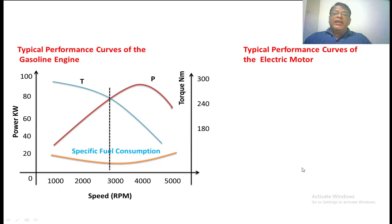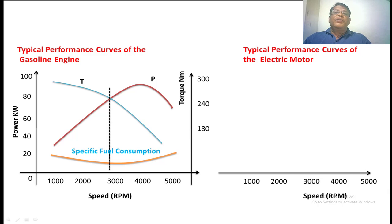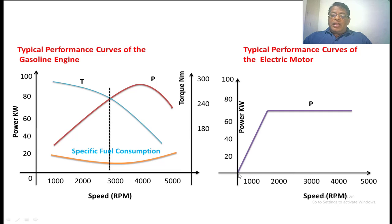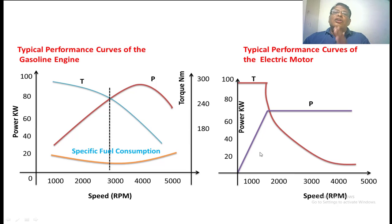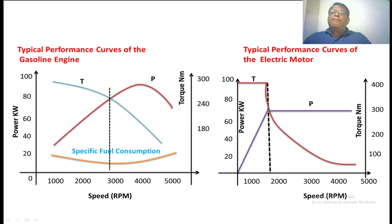Now, if we look at the performance curves of an electric motor: speed on the x-axis, power on the y-axis. As speed increases, the power developed in the motor also increases. After a particular value, power is constant. Up to that speed value, torque is constant — this is the constant torque region. If speed is further increased, the torque decreases — this is the constant power region. The speed up to which torque is constant is called the base speed. These are the typical performance curves of a gasoline engine as well as an electric motor.